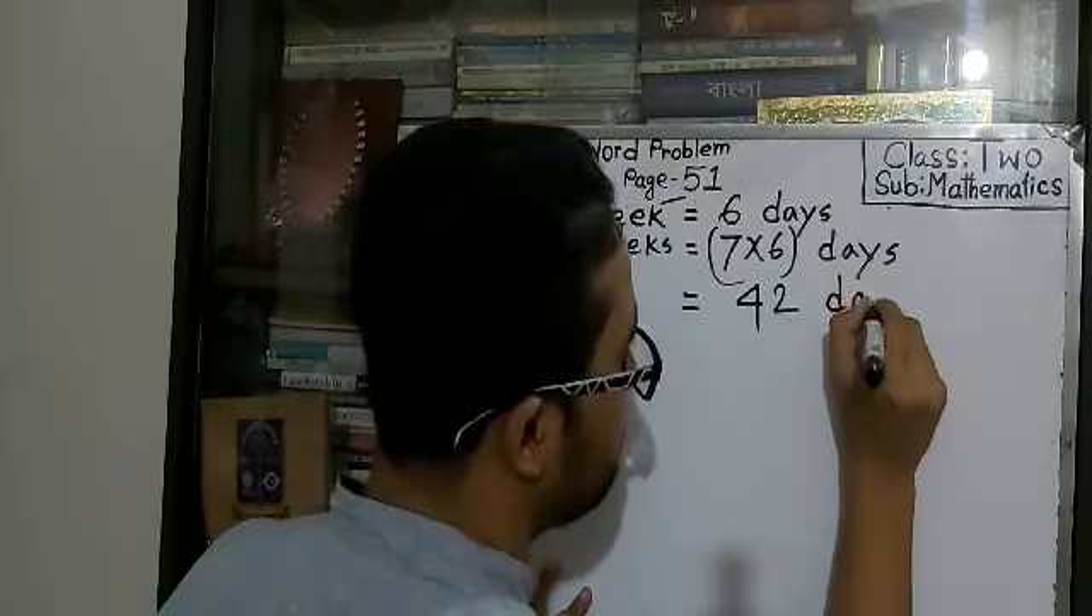Right here, 42. After multiplying, we have got 42 days. That means, Raja's father will work 42 days in 7 weeks. This is the answer.